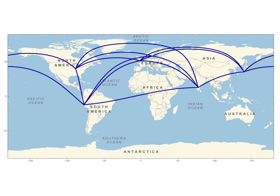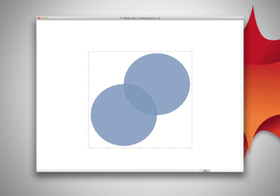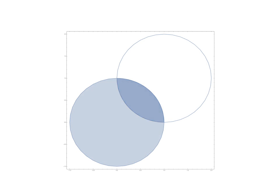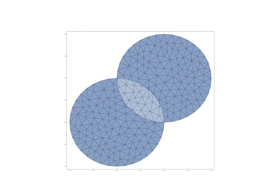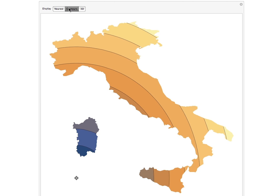If you have geo-data to display, Mathematica is now the place to put it. A new geometry framework allows you to calculate properties such as distances, areas, volumes, and centers of geometric objects. Like almost everything in Mathematica, it supports exact and high-precision numbers and symbolic values. With a full set of primitives and tools for combining them, any shape can be described in any number of dimensions. And with a full 2D and 3D mesh generation system, discrete regions are supported too.